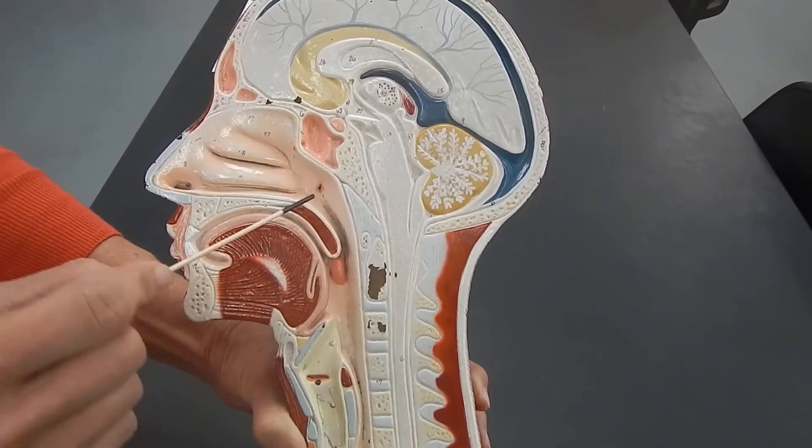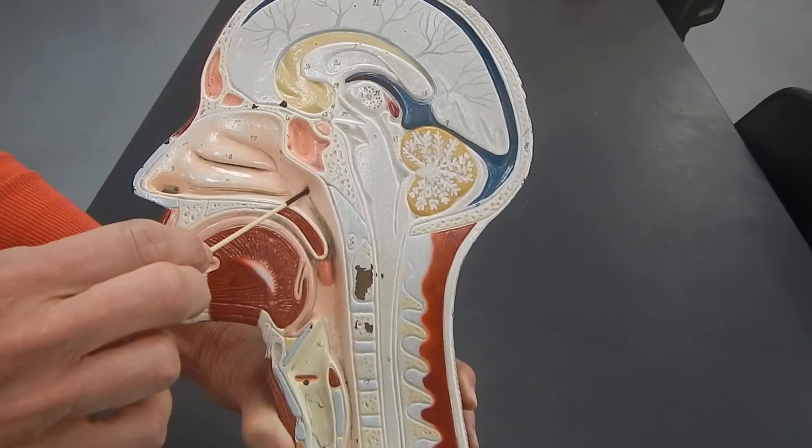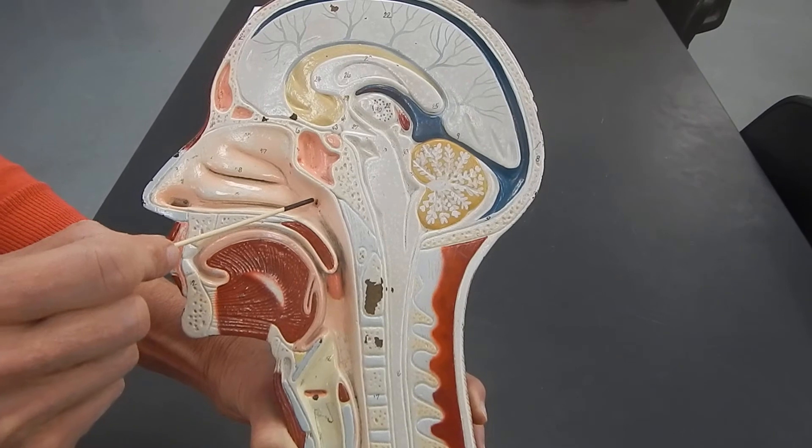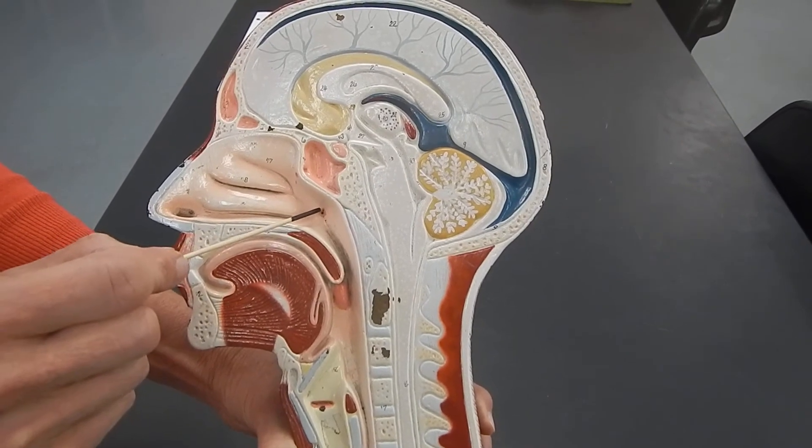If we go up into the nasopharynx, you see this hole here, and that hole is the opening to the eustachian tube, also known as the auditory tube.